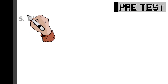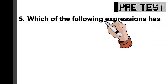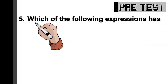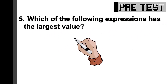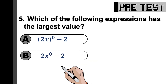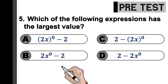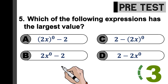And the last pre-test question: Which of the following expressions has the largest value? Is it A, the quantity of 2x raised to 0 minus 2? Or B, 2 times x to the power of 0 minus 2? C, 2 minus the quantity of 2x raised to 0? Or letter D, 2 minus 2 times x to the power of 0?